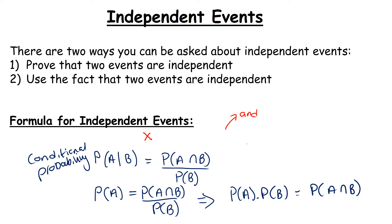There is quite a bit that is not in the log tables in this section, but these questions are so straightforward — all you need is that formula. The formula is: the probability of A multiplied by the probability of B is equal to the probability of A intersection B. Remember that in set notation, intersection means 'and'.